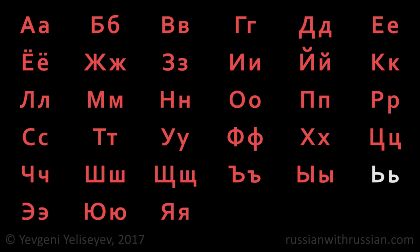And now you know 32 serial letters. It remains only to examine the letter called soft sign, or мягкий знак, and that is what we will do in the next lesson.